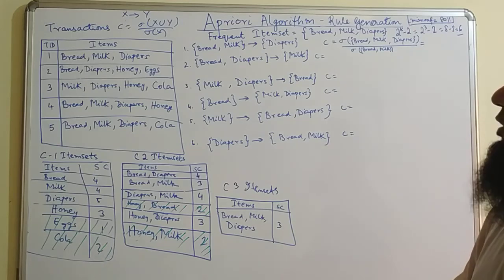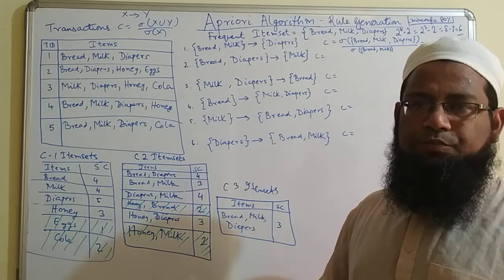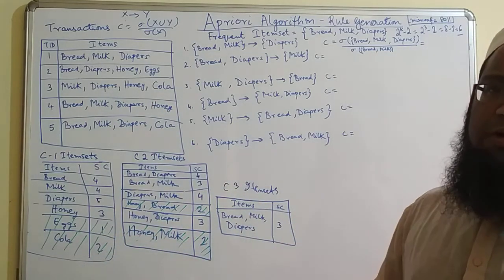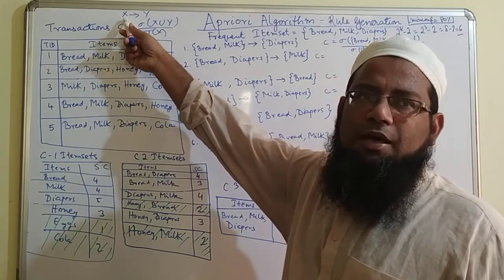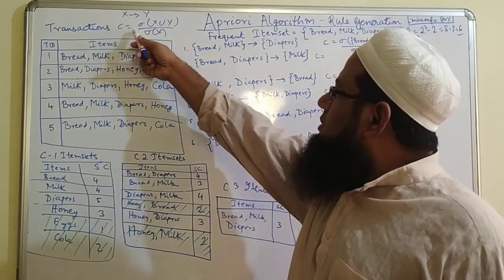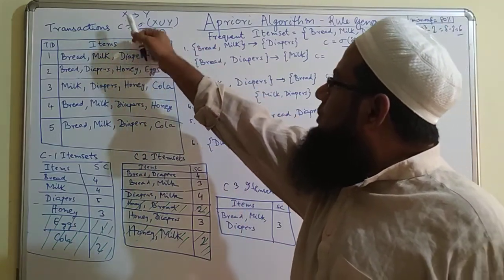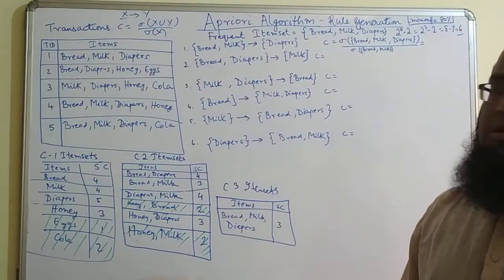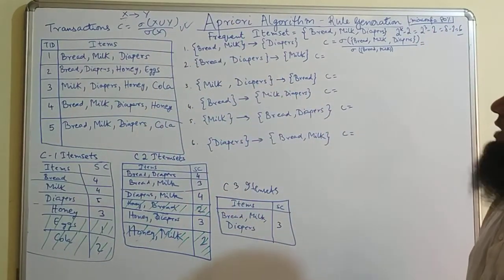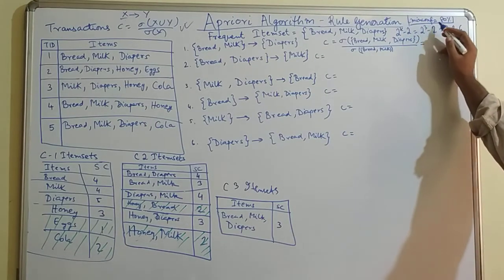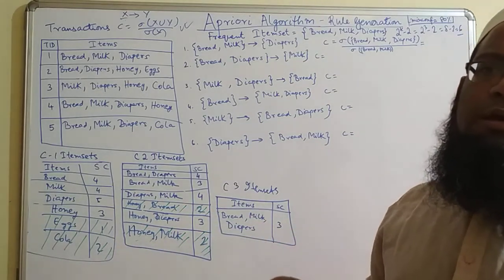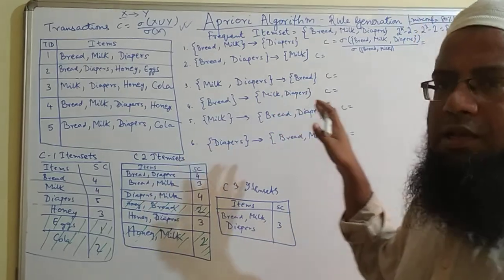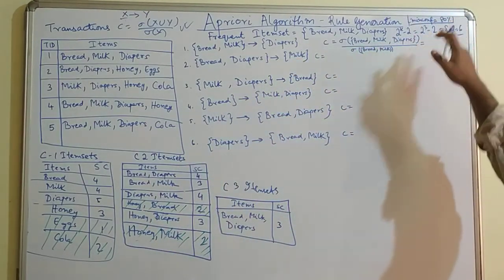Now we are going to use the concept of confidence. In the previous step we used support; here we use confidence. The formula for confidence: for a rule X implies Y, the confidence equals the support of X union Y divided by the support of X. In this example, we will assume the minimum confidence threshold is 80 percent. That means we take all rules with confidence greater than or equal to 80 percent, and any rule below 80 percent will not be considered.